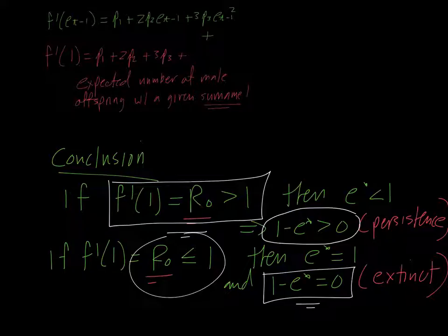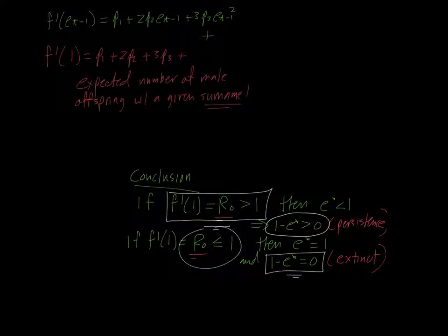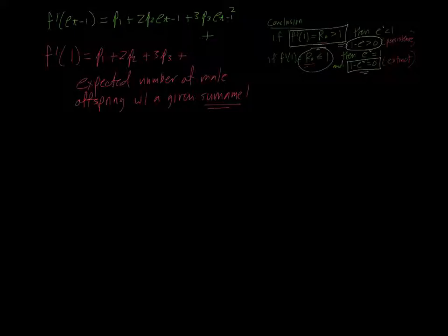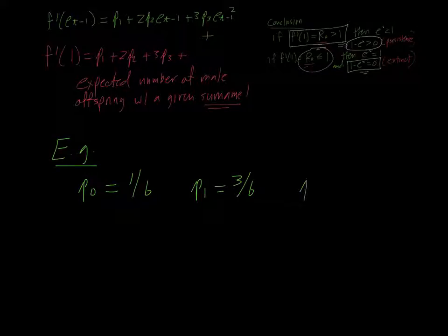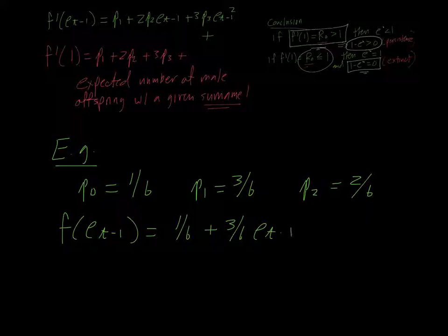So let's go ahead and look at just a very simple example of one of these. Let's look at the example where the probability of having no male children is 1 over 6, the probability of having 1 is 3 over 6 or 1 half of the time, and the probability of having 2 is 2 over 6. So, 1 out of every 3 male children has 2 male children. In this case, your f of e sub t minus 1 is going to be 1 over 6 plus 3 over 6 e sub t minus 1 plus 2 over 6 e sub t minus 1 squared.